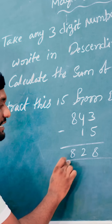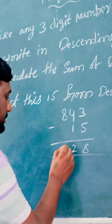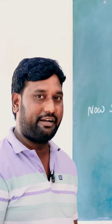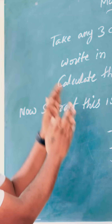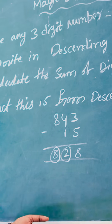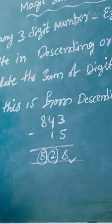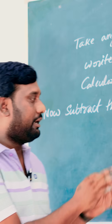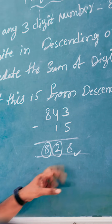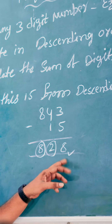Now circle any two digits from this answer. I am circling here 8 and 2. Now my dear audience, do this process carefully and save the circled numbers. I can reveal the remaining number without seeing anything — if you say 8 and 2, I will say the remaining number.